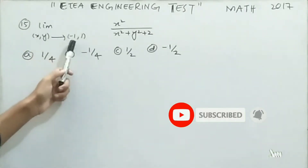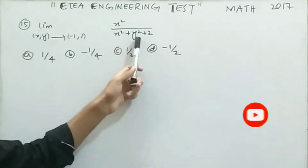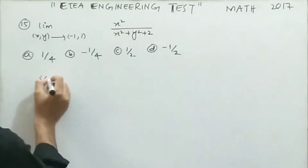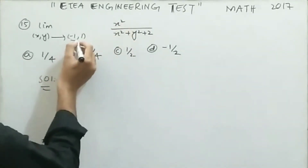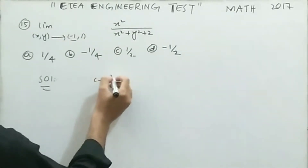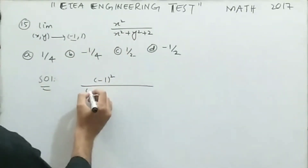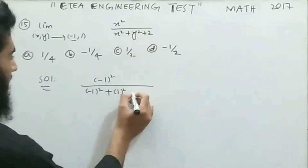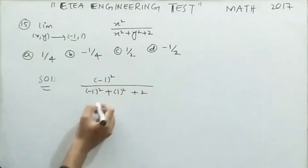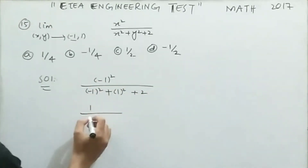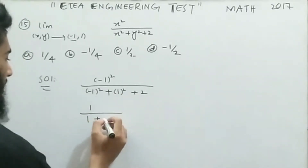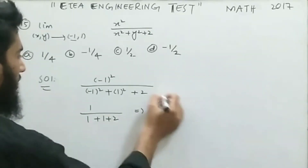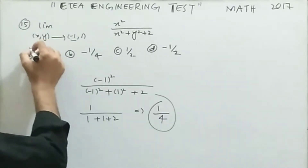MCQ number 15: find the value of the limit as (x, y) approaches (−1, 1) of x² divided by (x² + y² + 2). Applying the limit directly by substituting x = −1 and y = 1: we get (−1)² divided by ((−1)² + 1² + 2) = 1 divided by (1 + 1 + 2) = 1/4. The correct option is option number A.